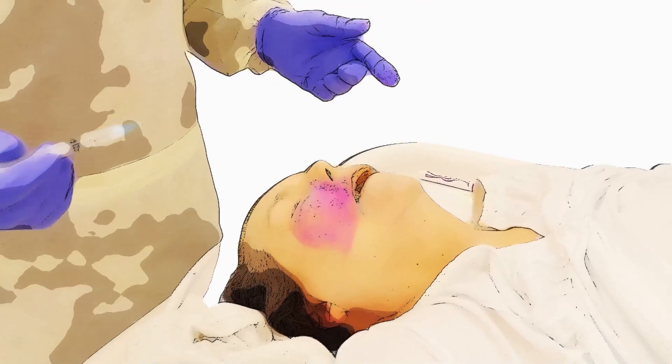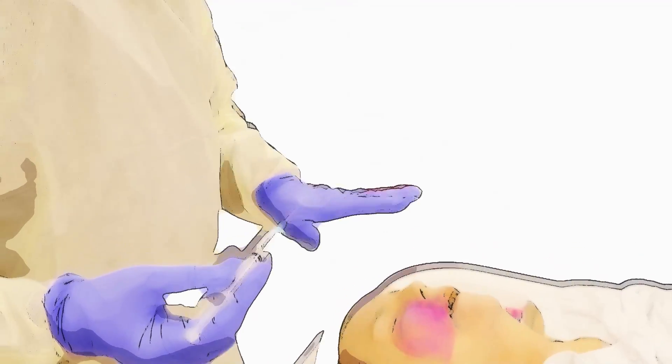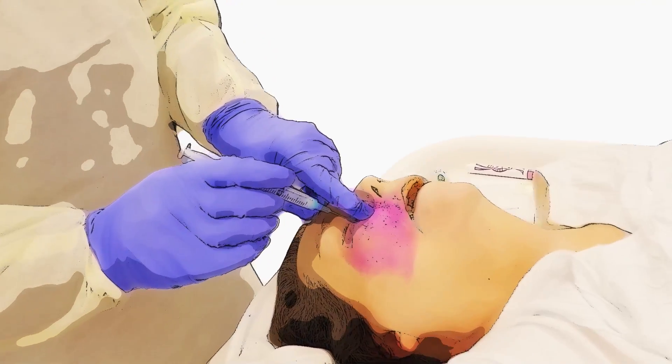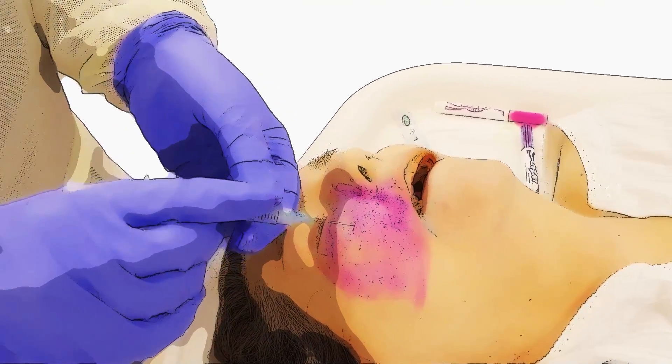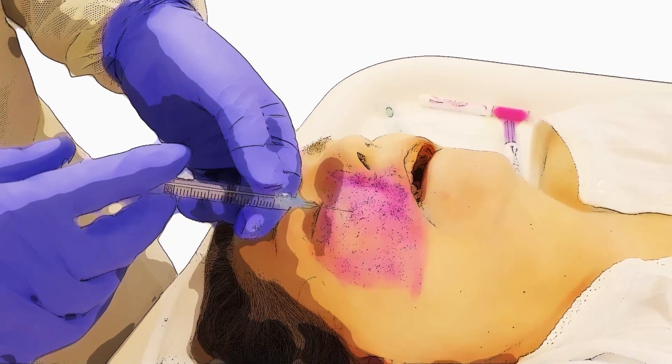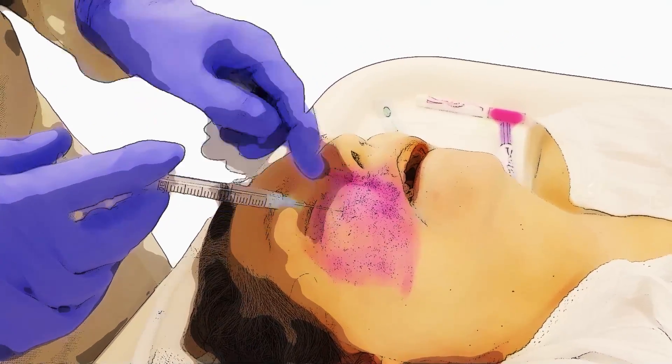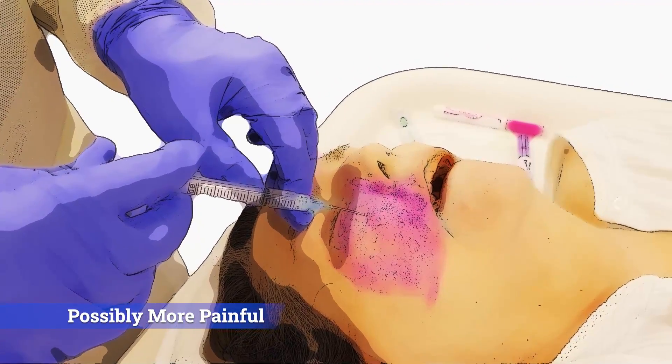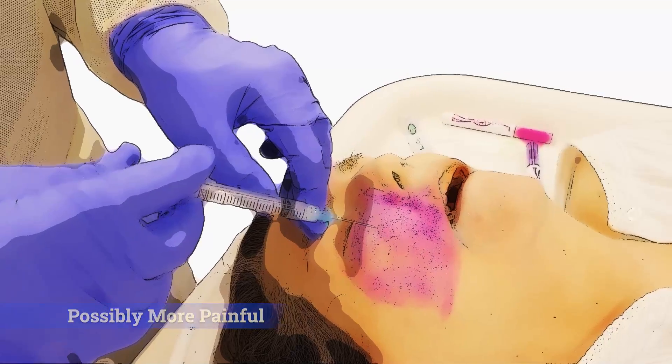Now the second technique - again, this would be all done sterilely. You can find your foramen and then go directly up to it, not into the nerve, not into the foramen, but just up directly to it, and then inject one or two mLs of your medication.